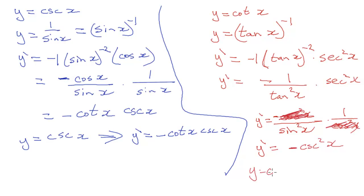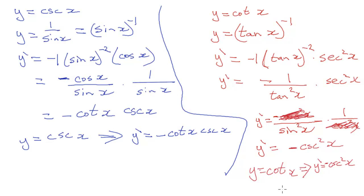Our last rule is that if y equals cotan x, then the derivative y prime equals minus cosecant squared of x. In the next video, you can find examples of each of these to get yourself more familiar with using these rules.